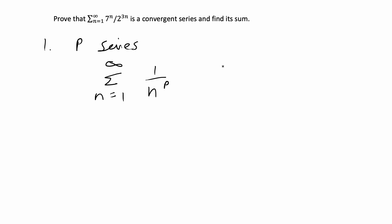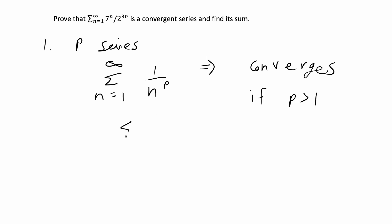This P series is going to converge by definition if P is greater than 1. So if you have a series that looks something like this, the P series converges by definition if P is greater than 1. For example, the infinite sum of 1 to infinity of 1 over n to the 3 would converge, and 1 over n to the 2 would converge as well.